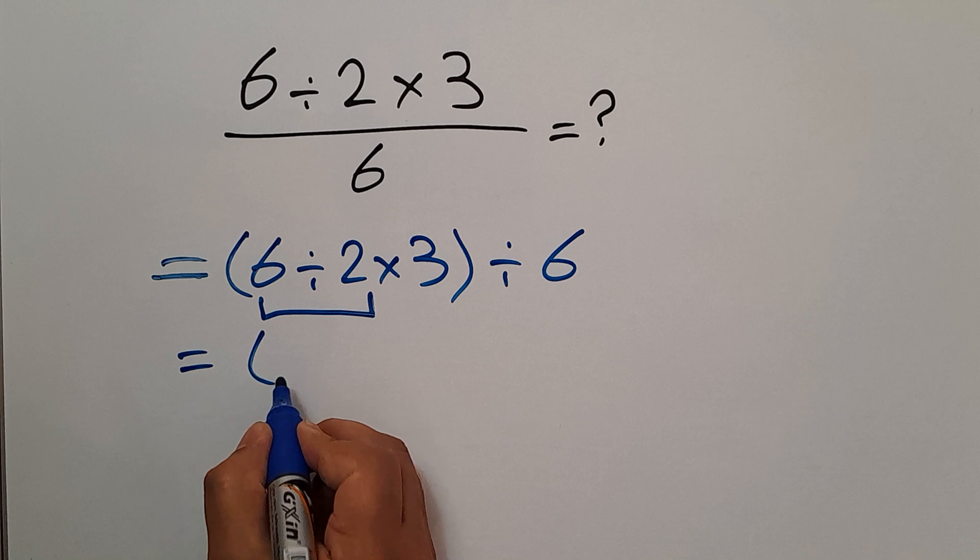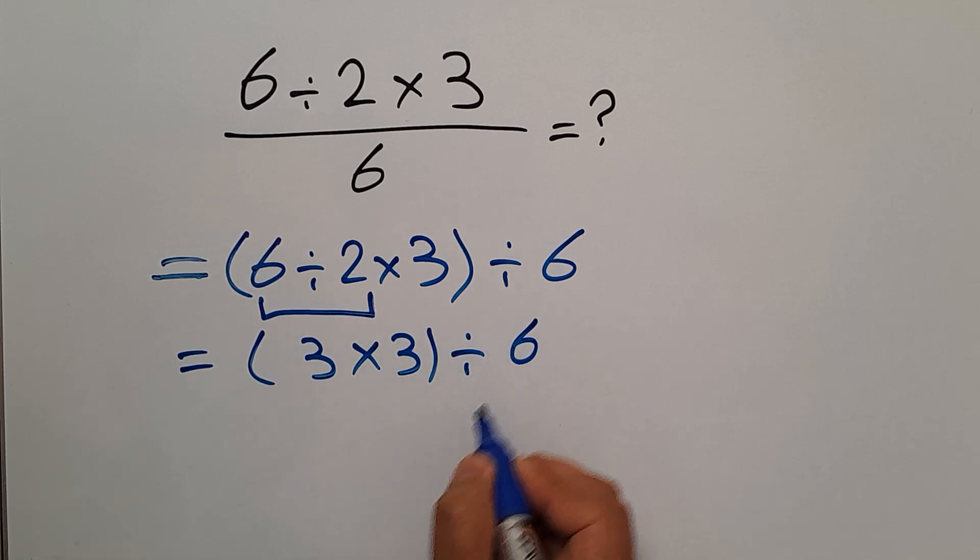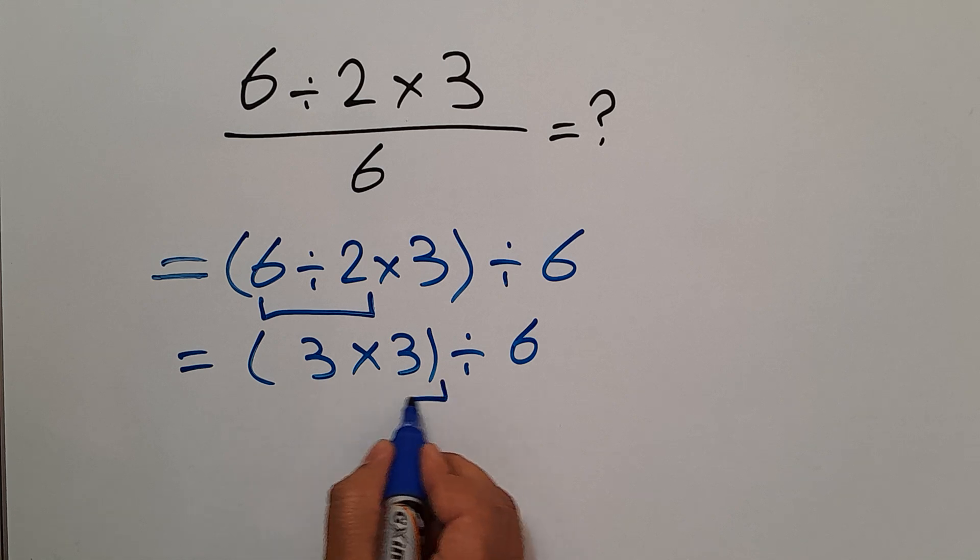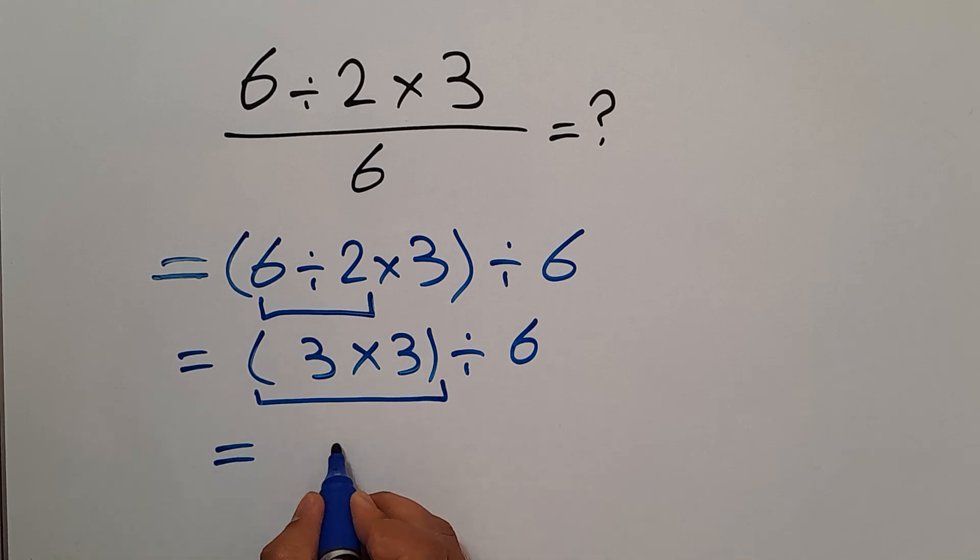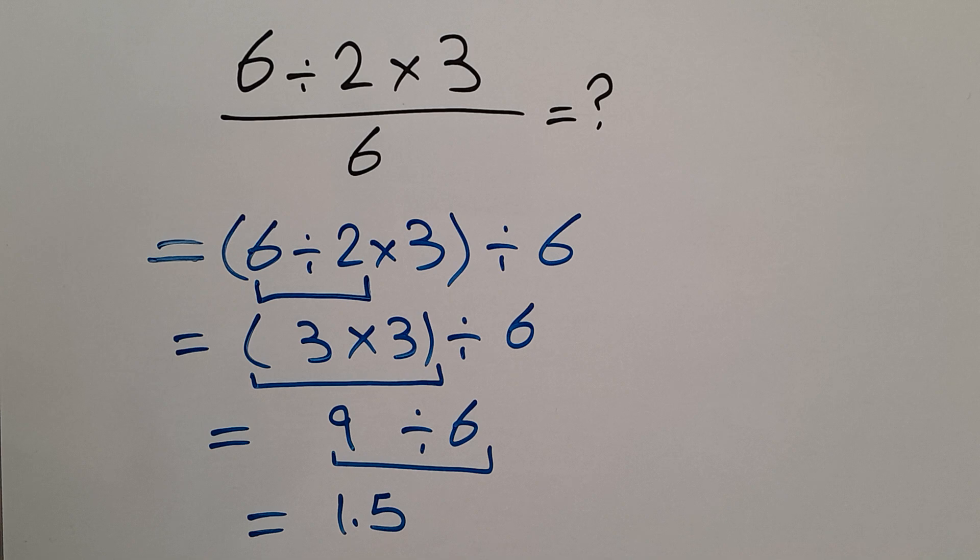parentheses (3 times 3) divided by 6. 3 times 3 gives us 9, so we have 9 divided by 6. And 9 divided by 6 equals 1.5. So our final answer to this problem is 1.5.